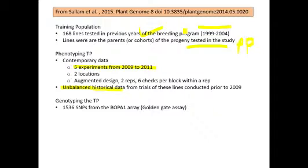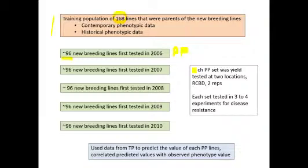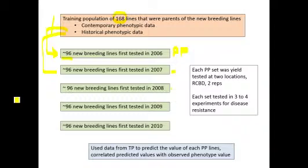The lines were genotyped with 1536 SNPs. Here's a diagram of this scheme: the training population data is used to build the prediction model. The first prediction population consists of 96 new breeding lines first tested in 2006, and these 96 lines are progeny from crosses among those 168 training lines, so there's a high degree of relationship between the progeny population and the training population. There are five different progeny populations tested in years 2006 through 2010. The GS model built using data from the training population is then used to predict the phenotypes of each of these new breeding line sets.